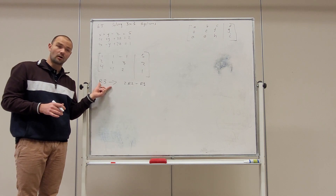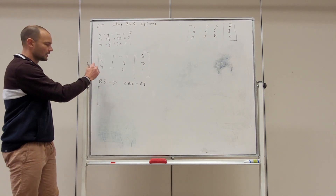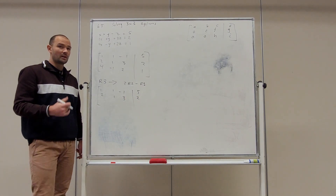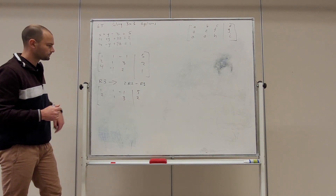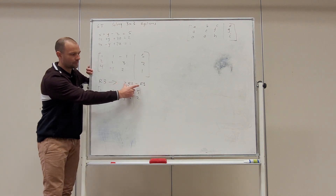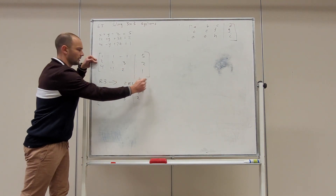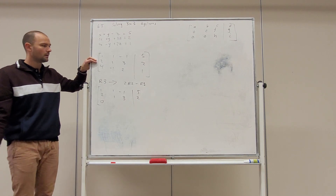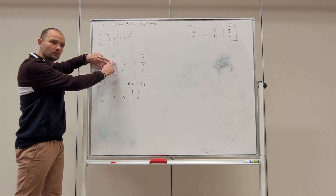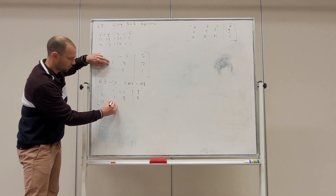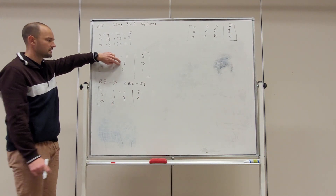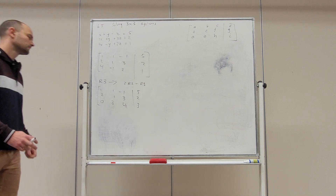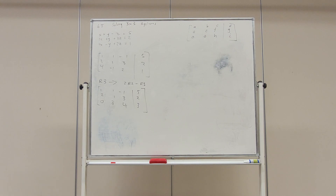Now that we've stated our operation, let's restate the matrix in row echelon form. The top rows stay the same — row two is not changing. We're replacing row three with two lots of row two, take away row three. Two times two is four, four take four is zero — that's what we were trying to do. Two times one is two, two take away minus one is three. Two times three is six, six take away two is four. Two times two is four, four take away one is three. So this is the matrix we arrive at from the first operation.